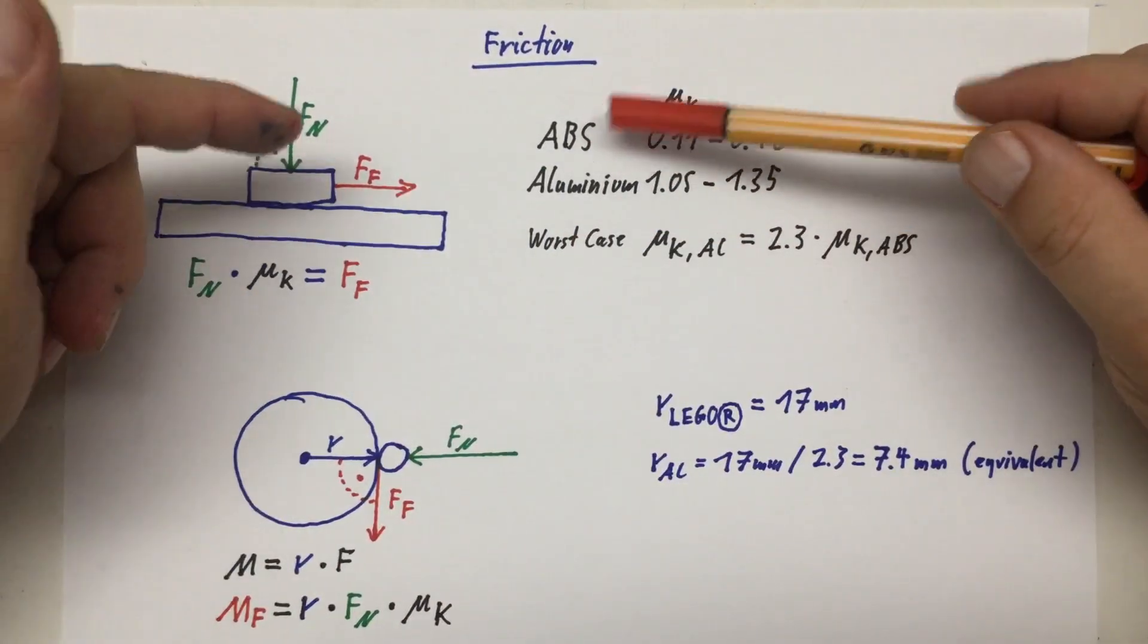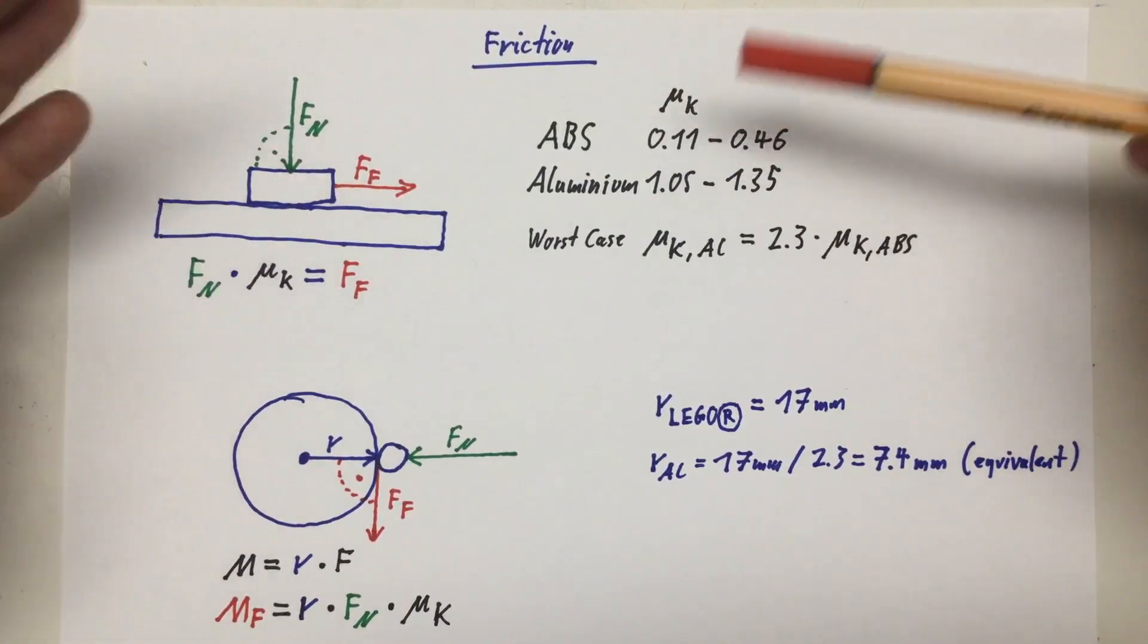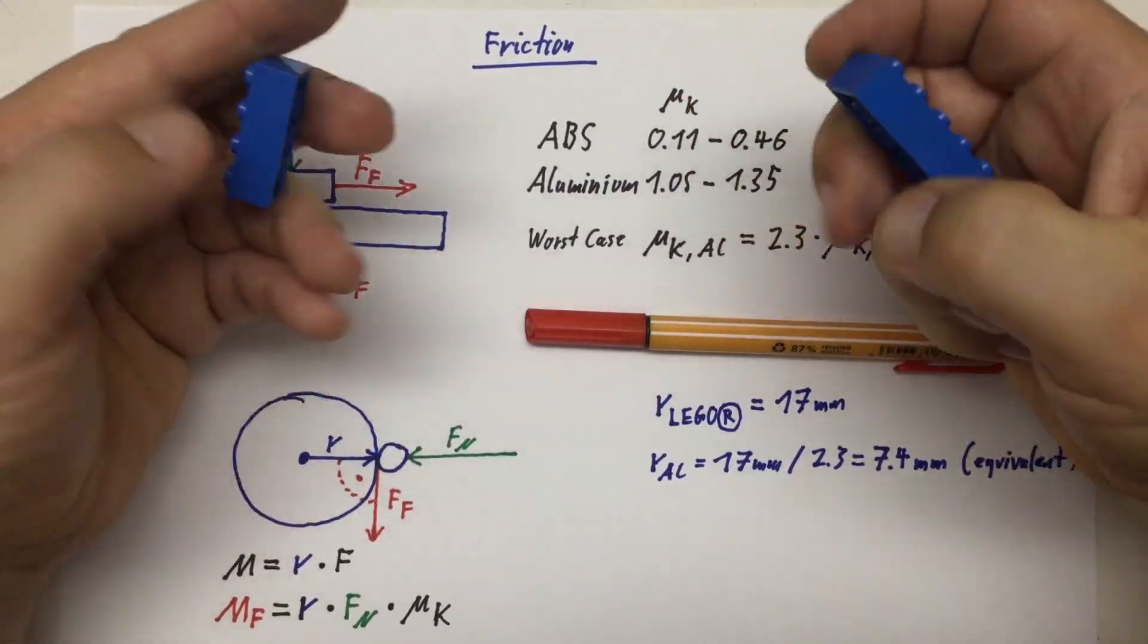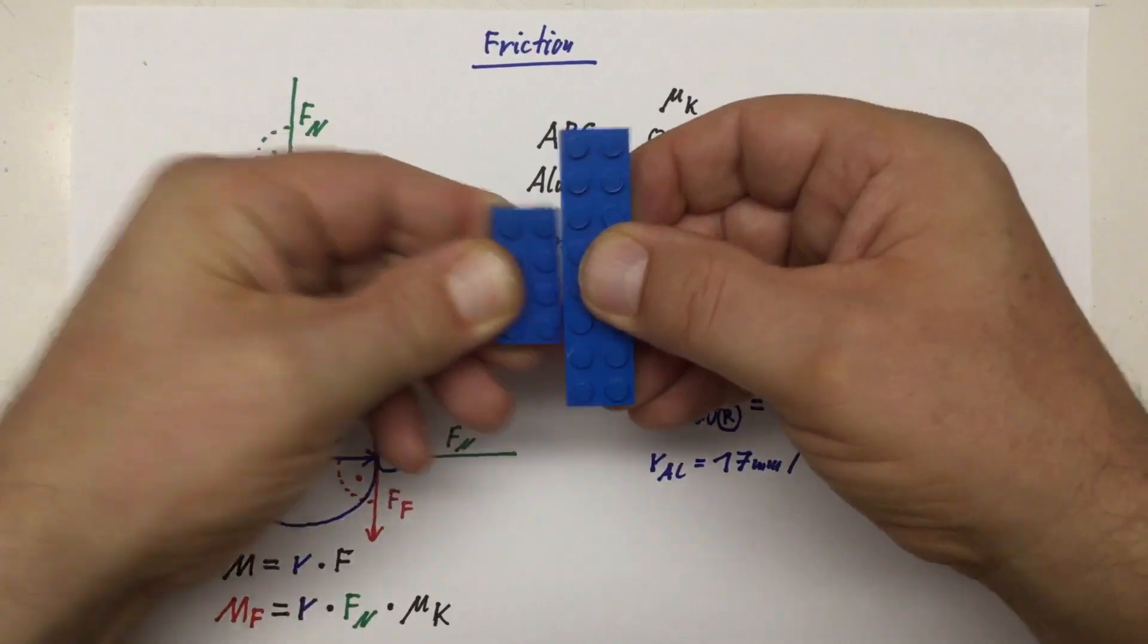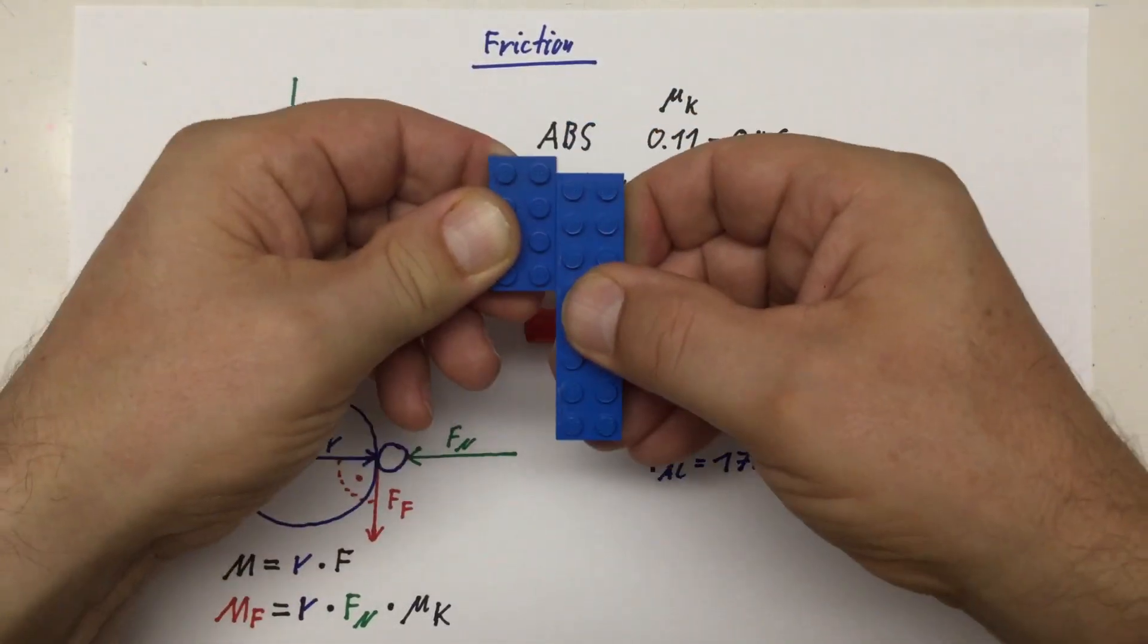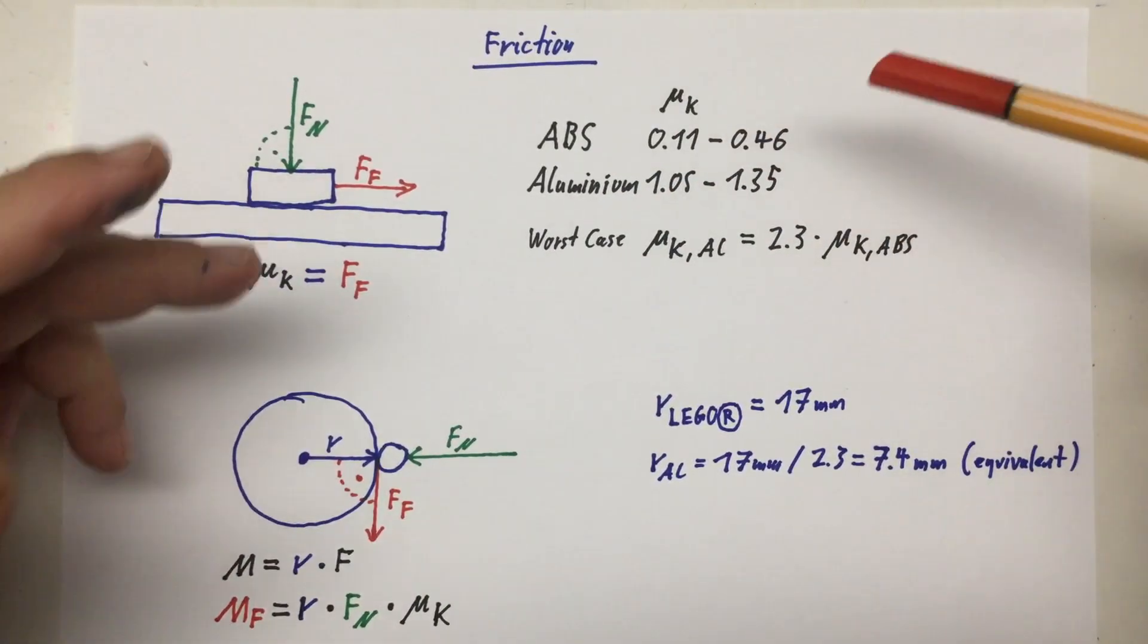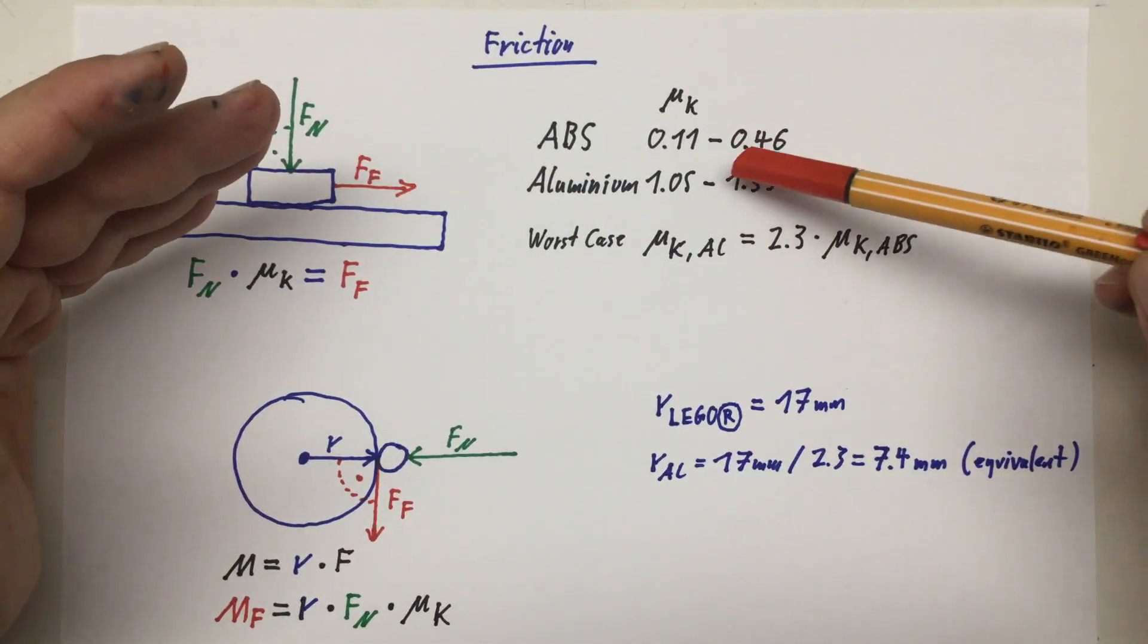For ABS, the material that LEGO is made of, that friction coefficient is between 0.11 and 0.46. There are a lot of factors here - you know, the exact flavor of the ABS, the finish of the surfaces and so on. But yeah, just take two LEGO bricks and slide them together and you see you can apply a lot of force here, but you don't need a lot of force sideways to slide them. Anyways, aluminum is a whole other ball game. There your friction coefficient μk is, again dependent on the surface finish and stuff, between 1.05 and 1.35.